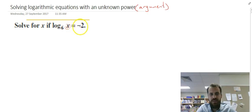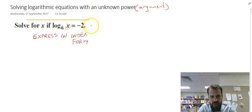Log base 6 of x equals negative 2. Now really it's quite straightforward here, you just want to express it in index form. So if we express this in index form, that's log base 6 of x equals negative 2, that means that 6 to the negative 2 equals x. And from there you can just solve it.